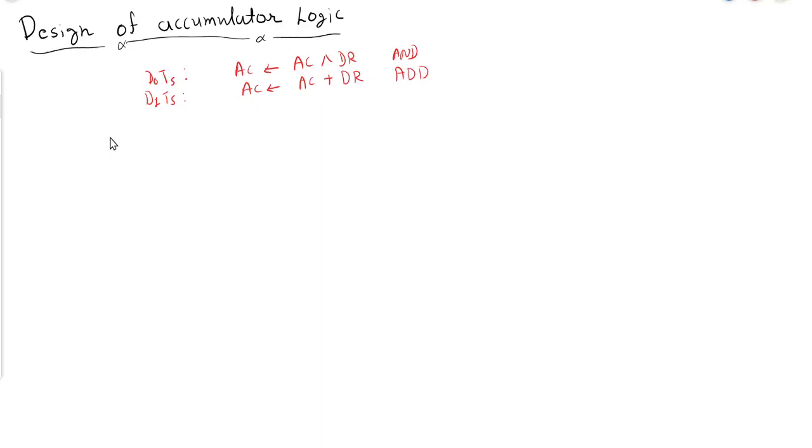Then D2T5, AC equals DR, where we will transfer the content from DR to AC, means transfer. Then next is...